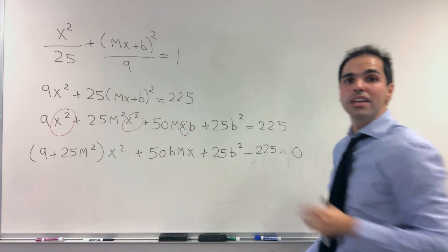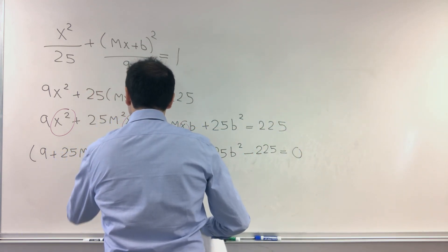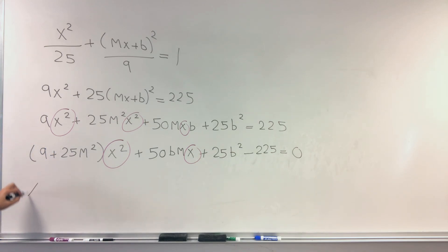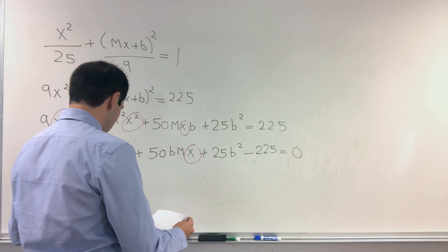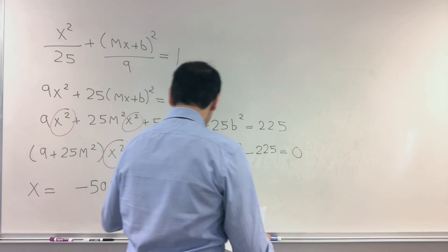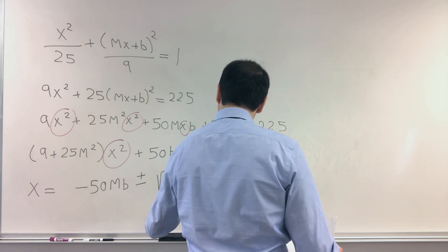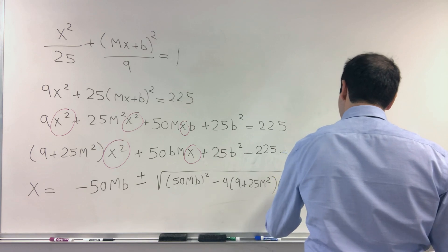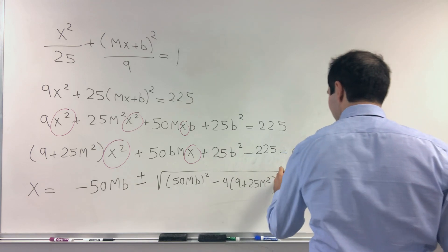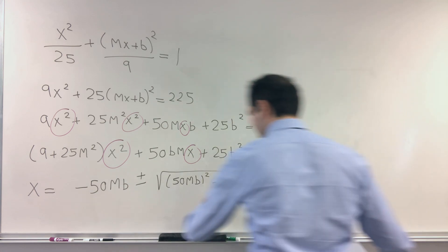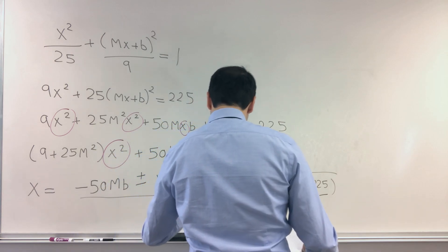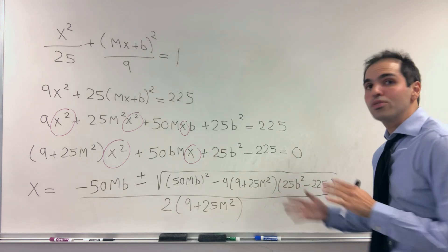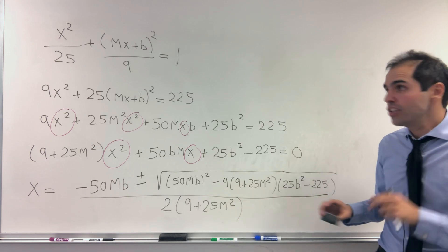The nice thing is this becomes a quadratic function in x, so of course we can use the quadratic formula to get x: x = (−50mb ± √[(50mb)² − 4(9 + 25m²)(25b² − 225)]) / [2(9 + 25m²)]. But remember, our goal is not to solve for x — our goal is to solve for m and b. And for this, I would like to remind you of the picture a little bit.